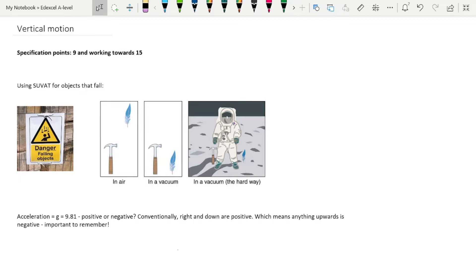If we're going to use SUVAT for objects that fall, the first and most important thing is understanding that when objects are moving vertically, they are constantly accelerating due to gravitational force.